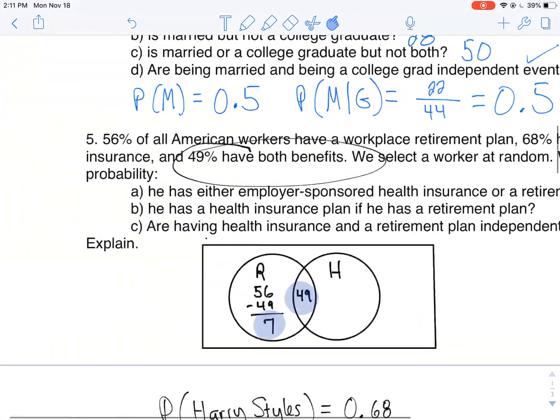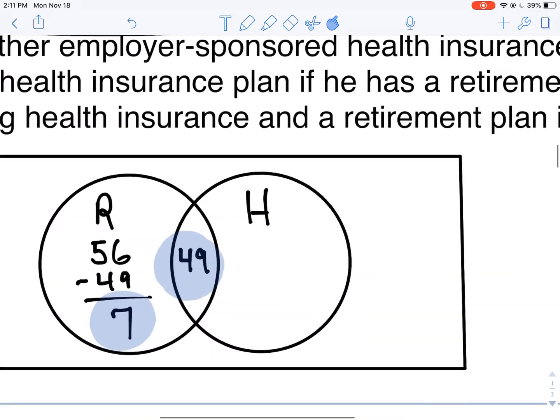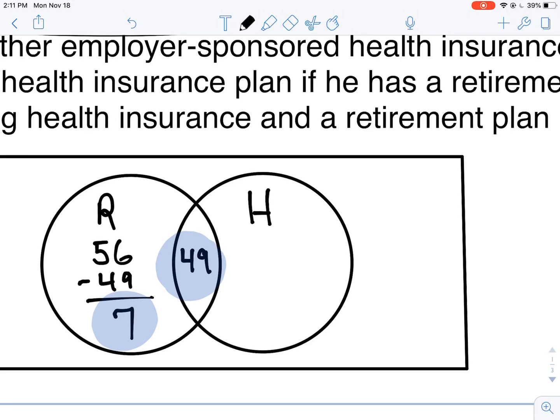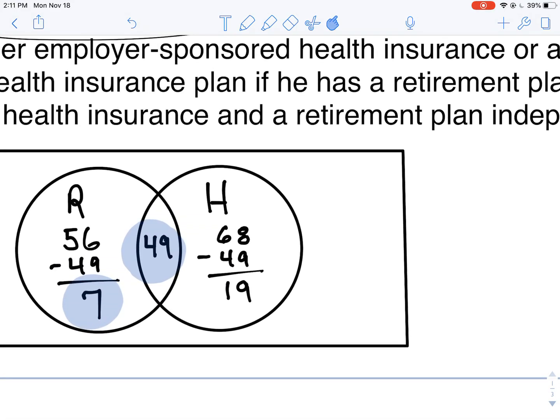Likewise, they tell me that 68 have health insurance. That includes both because it doesn't say anything about them only having health insurance. So I'm gonna take away the 49 and that leaves me with 19. Now what I like to do, I want to figure out what's gonna go on the outside here.